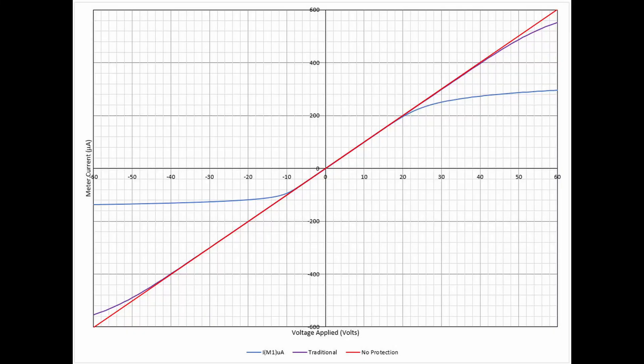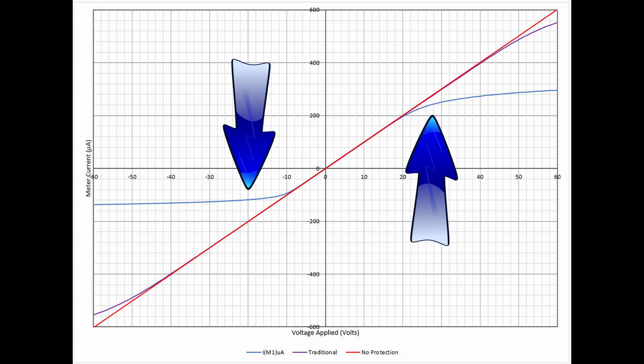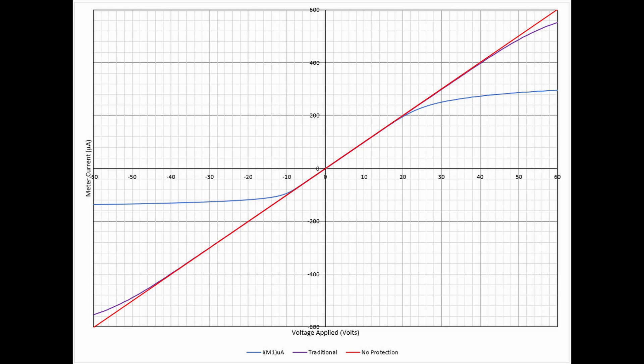The best way to appreciate the results is to compare them with what things would be like if we had no protection at all and with the traditional protection. This is what you see here in this graph. The red line is what we would expect if we had no protection at all. The purple line is what we would have with the traditional protection. The blue line is the results of my new and improved version. You can see that the protection kicks in much sooner and does a better job of limiting the current through the meter movement.